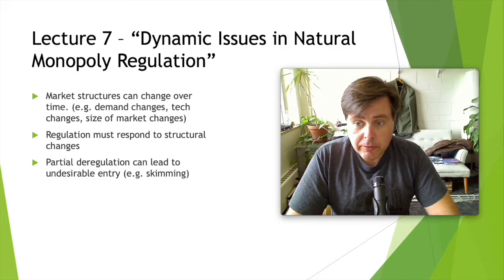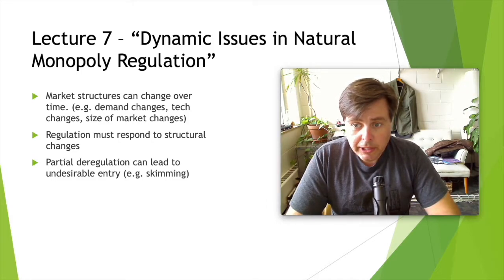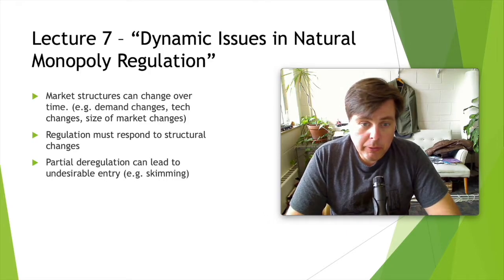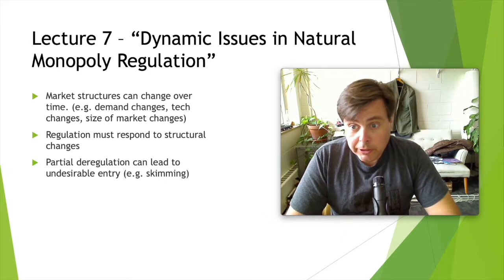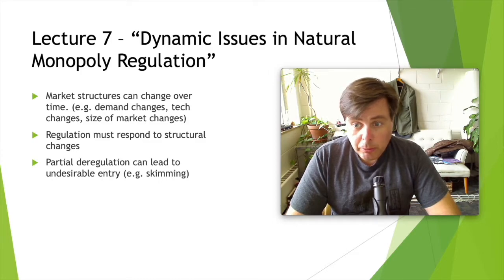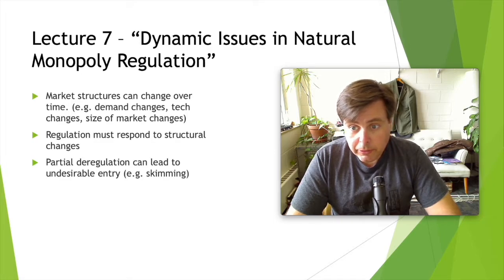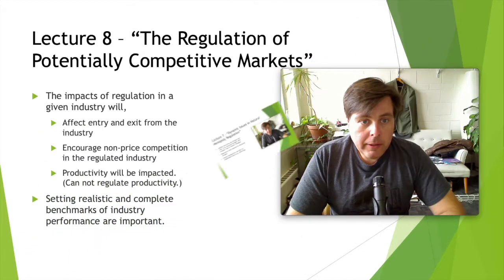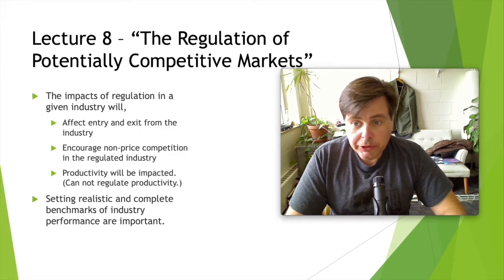In the seventh lecture, we talked about the dynamics of how market changes or firm cost changes can turn what were monopolies into competitive markets, and what were competitive markets into monopolies. In other words, technological or market changes can lead to a situation where the appropriate regulatory structure also changes. What was appropriate to regulate in one period isn't necessarily appropriate in another, and the reverse is also true.